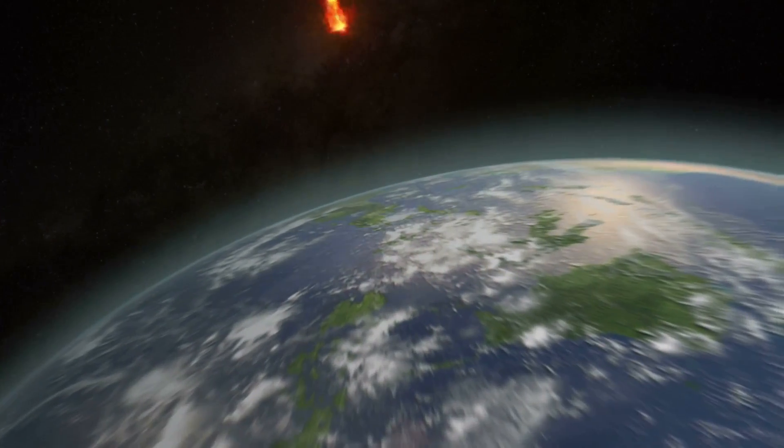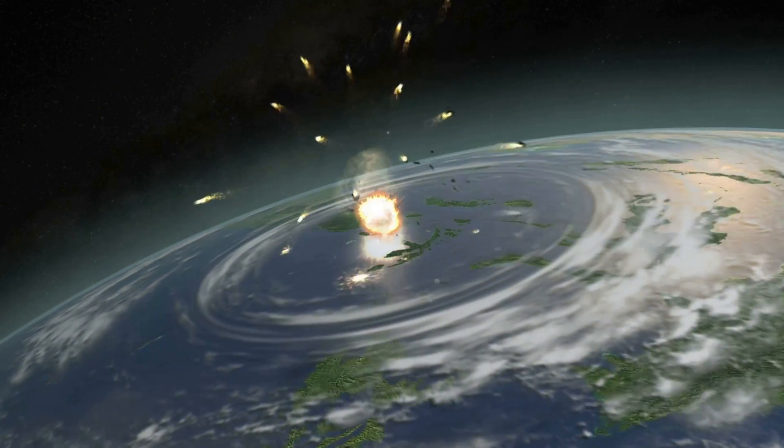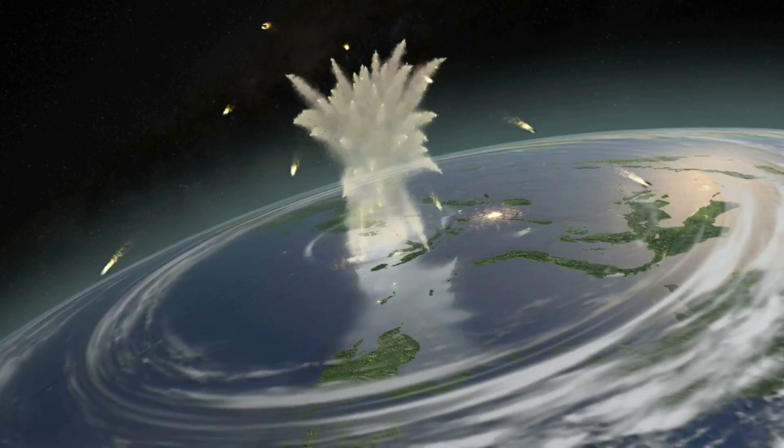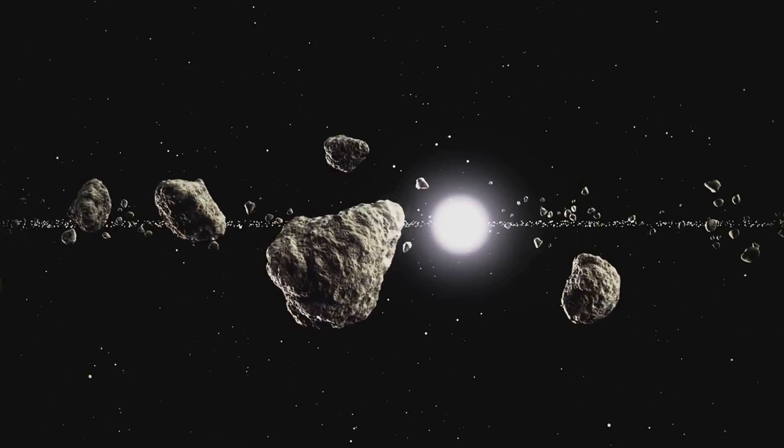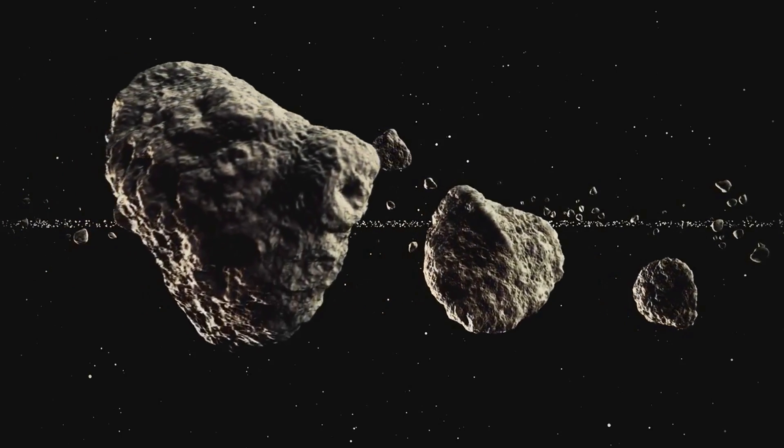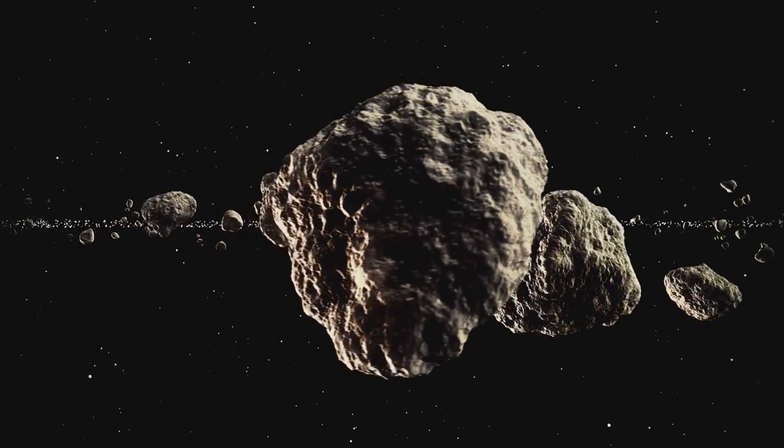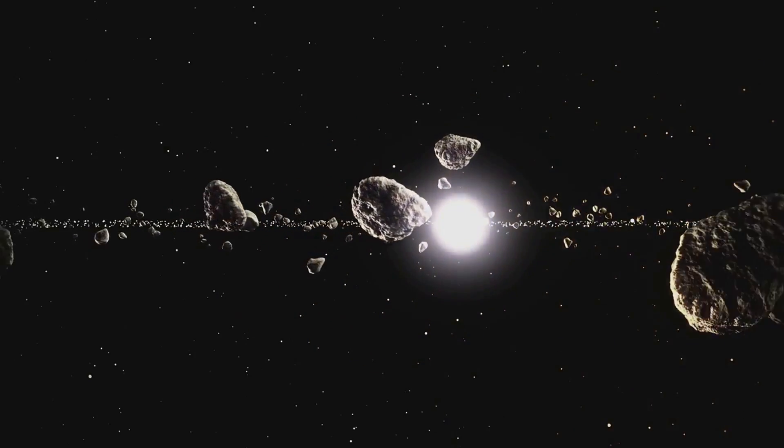An atmosphere, you see, acts as a protective shield, burning up smaller meteoroids before they can reach the surface. But Mercury, with its thin, almost non-existent atmosphere, doesn't have this luxury. It's essentially a sitting duck for incoming space debris. And over billions of years, this has resulted in a surface that's heavily pockmarked with craters.